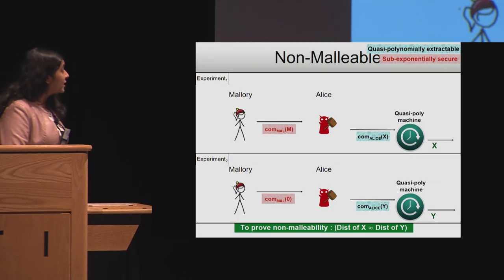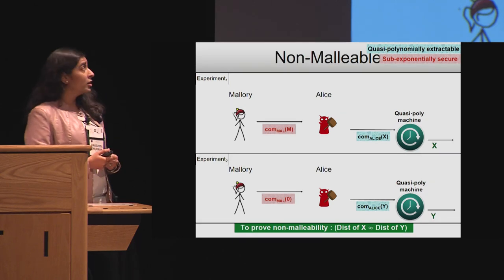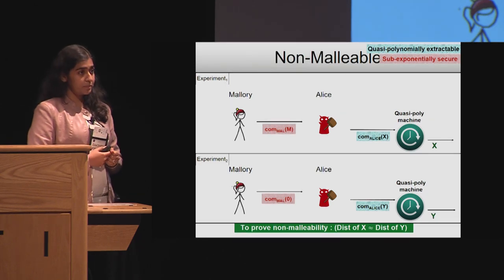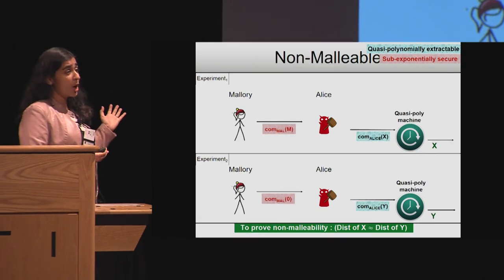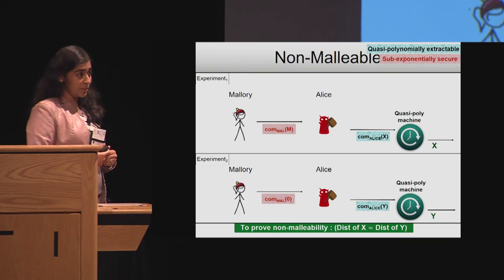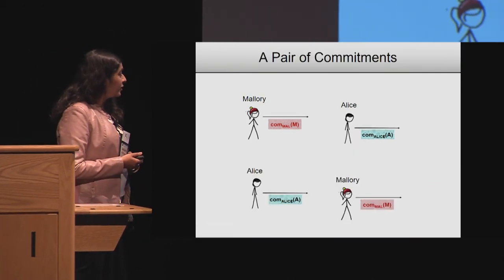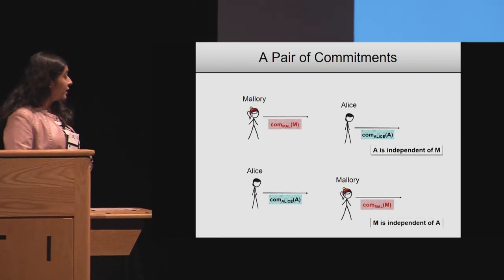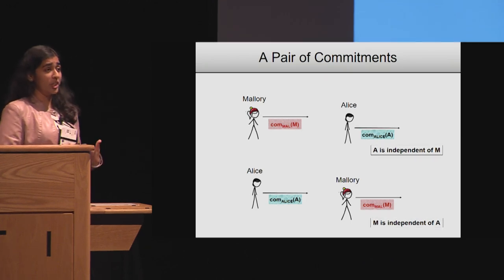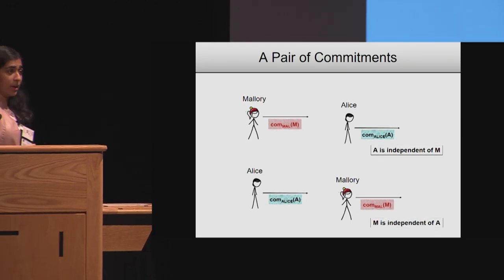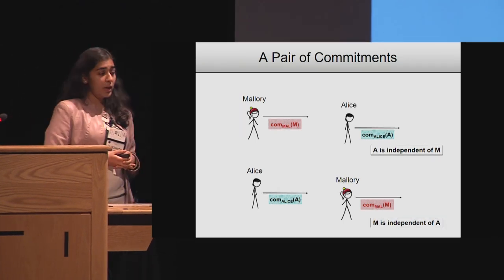This means that Alice, together with the quasi-polynomial time machine, are a quasi-polynomial time breaker for Mallory's commitment. And this would be a contradiction — which is how we argue that it is non-malleable even when Alice becomes malicious. At the end, we have a pair of commitments where no matter who the bad guy is, these commitments are non-malleable with respect to each other: Alice cannot maul Mallory's commitment and Mallory cannot maul Alice's commitment.